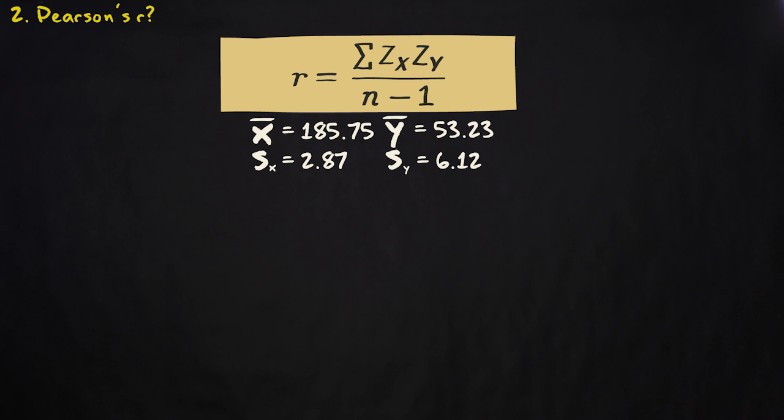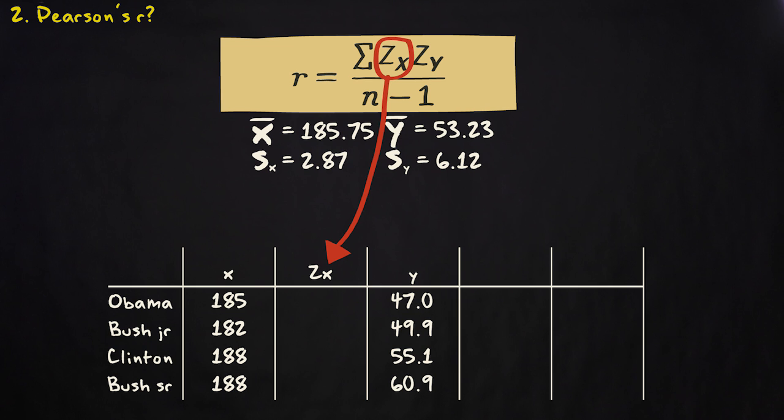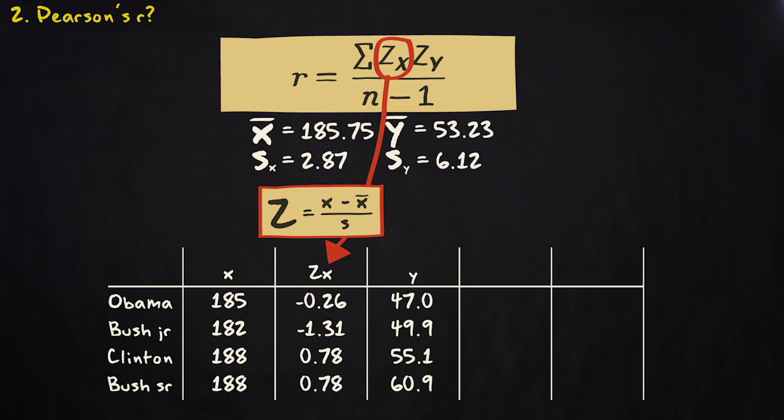First, we compute the z-scores for our independent variable by subtracting the mean from every original score and then dividing the outcome by the standard deviation. We do that here. 185 minus 185.75 divided by 2.87. That makes minus 0.26132. We also do that for the other scores. Here are the results.